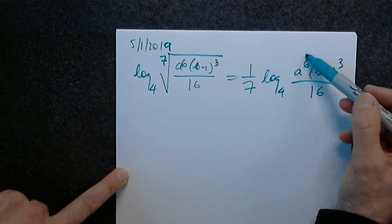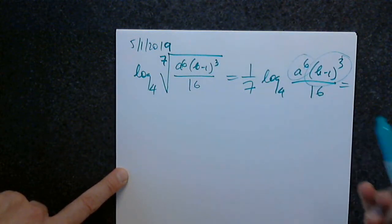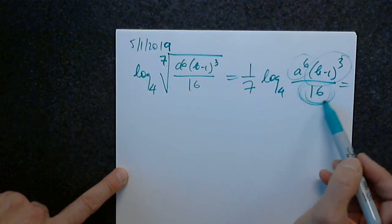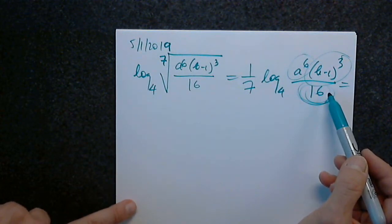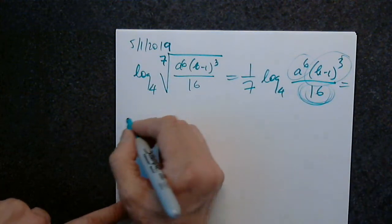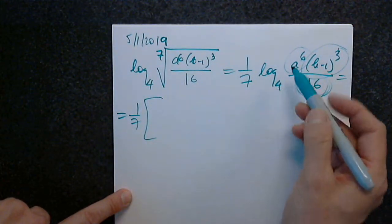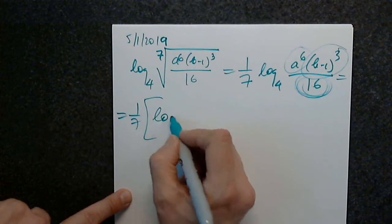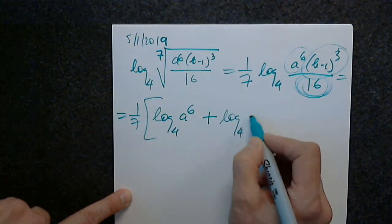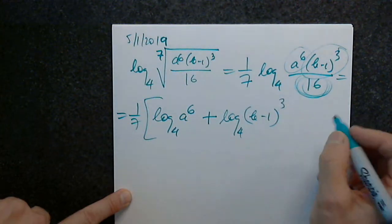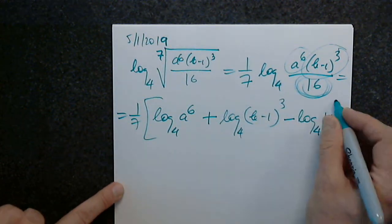Remember, quantities that come from the top will have a positive sign in front of the log. Quantities that come from the bottom will have a negative sign in front of the log. So we get 1 over 7, bracket, log base 4 of a to the 6th plus log base 4 of b minus 1 to the 3rd, minus log base 4 of 16.